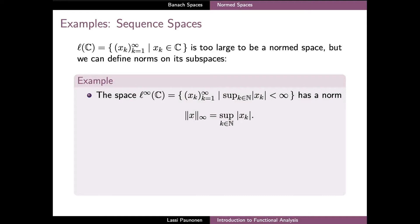For us, more interesting cases arise when we equip particular infinite dimensional vector spaces with norms. And if we begin by considering sequence spaces, we can first of all note that the space of all sequences of complex numbers is quite a bit too large for defining a norm. But instead we can define norms on some of its subspaces. And for example, the space ℓ^∞ of bounded sequences has a norm which is defined as the supremum of the absolute values of the elements in the sequence. And this value is well defined since by assumption in the definition of the space ℓ^∞, these absolute values are uniformly bounded with respect to the index k.